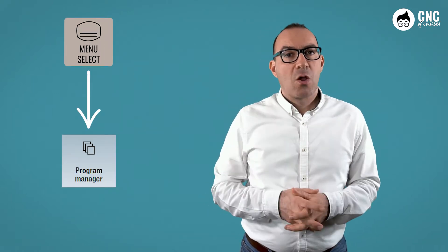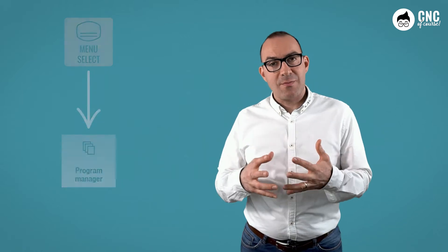Those who have already followed the operating course will recall some information that I am now going to describe, but I believe it is essential to include in this course. The management of programs or more generally of files takes place through the Program Manager menu. To access the program management, we have two ways. Through the main menu, then menu select, and then Program Manager. Or the short way, by pressing directly the Program Manager button in the operator panel. When the file management window opens, the following screen appears.